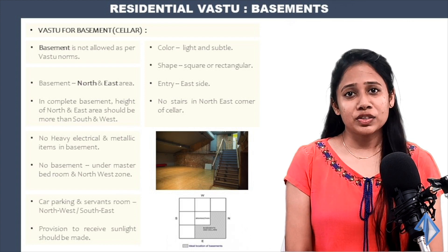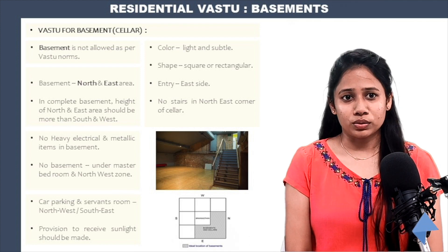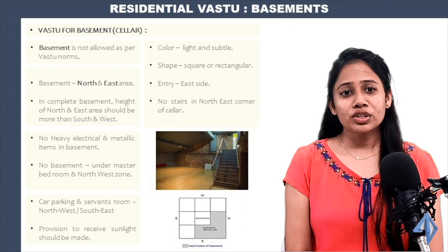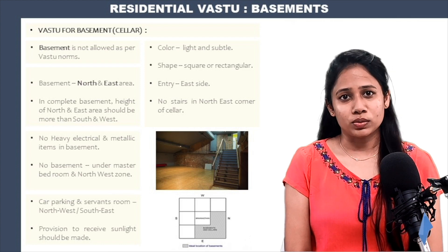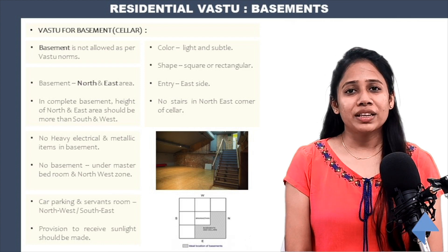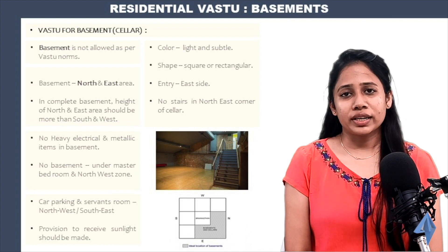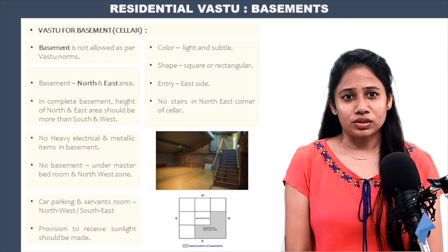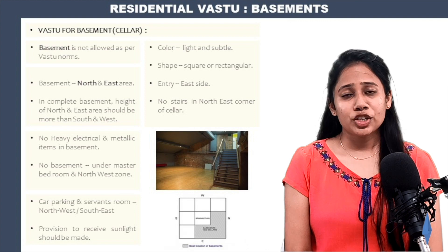Avoid placing or constructing basements under master bedrooms or in the north-west zone. Car parking and servants' rooms can be on the north-west or south-east. Provisions to receive sunlight should be made, preferably on the north and east zones. The color of the basement should be light and subtle. Basements should be in the shape of a square or rectangle. If possible, entry for the basement should be given from the east direction. There should be no staircase in the north-east corner of a basement.